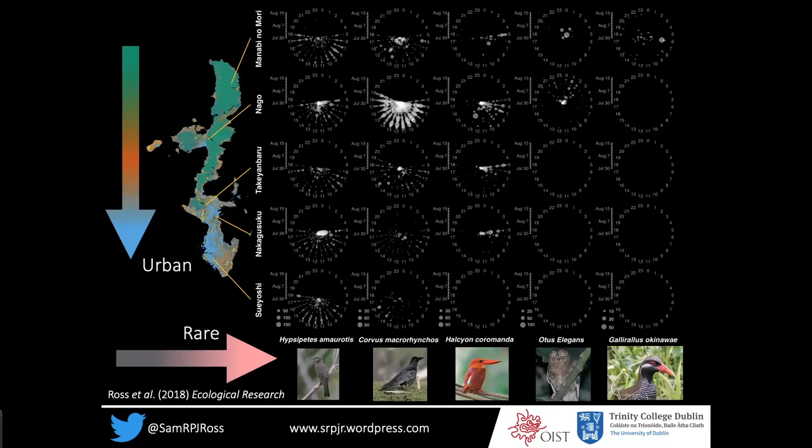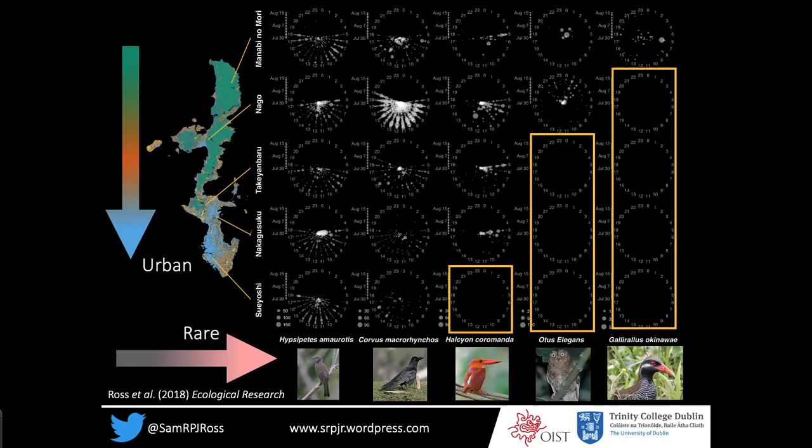We did this for five different species with a range of habitat sensitivities across sites. We found that the rarer species were not detected in our more urbanized sites. So maybe we're seeing some effect of land cover here when we look at the between-sites scale — the island-wide scale.